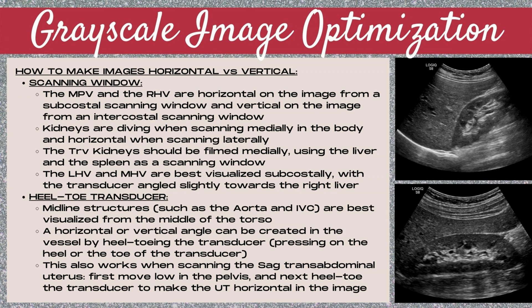Now that we know grayscale loves horizontal structures and Doppler loves vertical structures, how do we make our structures either vertical or horizontal on the image? Method one is by changing the scanning window. The main portal vein and right hepatic vein are horizontal from a subcostal scanning window but vertical from an intercostal scanning window. Kidneys are diving when scanning medially and horizontal when scanning laterally. Transverse kidneys should be filmed medially, as a subcostal or medial window uses the liver and spleen as a scanning window.